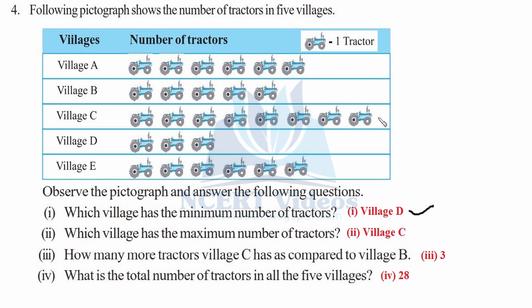Which village has the maximum number of tractors? Village C has the longest row — counting: 1, 2, 3, 4, 5, 6, 7, 8 tractors. How many more tractors does village C have compared to village B? Comparing C and B, they share 5 in common, but C has 3 extra. So village C has 3 more tractors than village B.